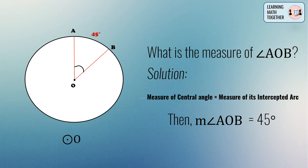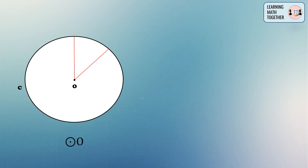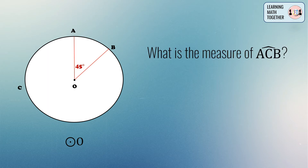Now let's proceed to example number two. We have the same figure, but the given here is central angle AOB which is equal to 45 degrees, and our task is to find the measurement of major arc ACB. As you can see, the only given is the central angle, so whatever the measurement of the central angle, that is also the measurement of its intercepted arc.